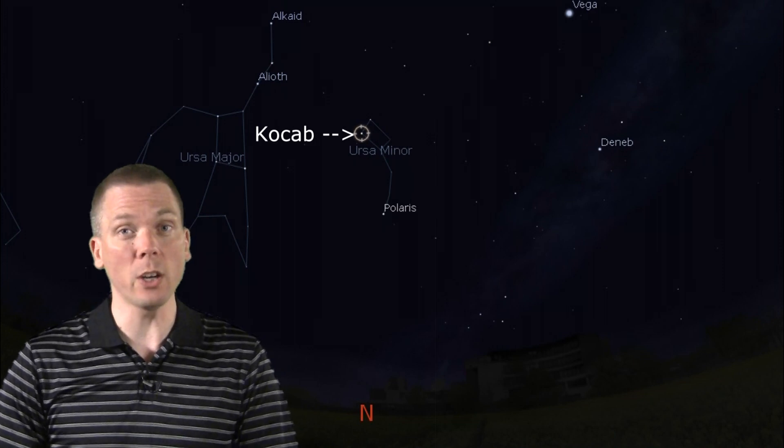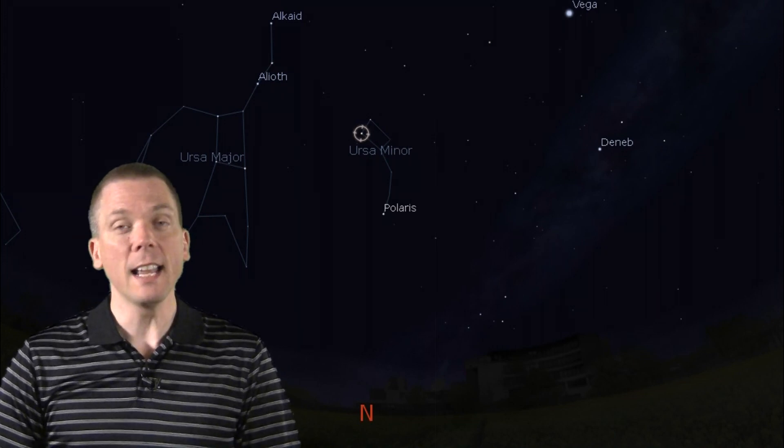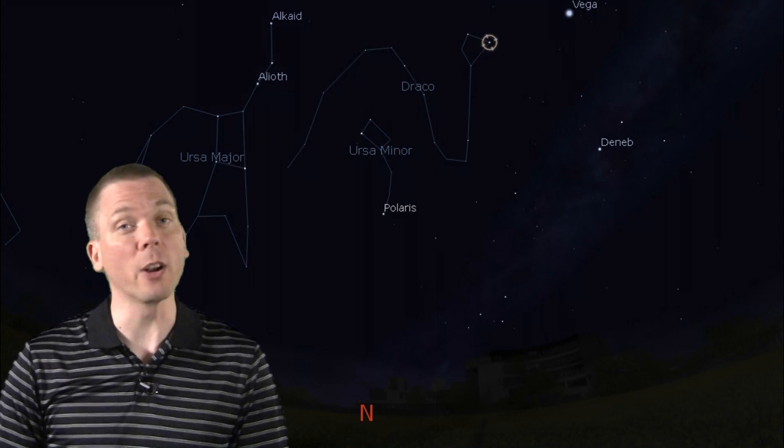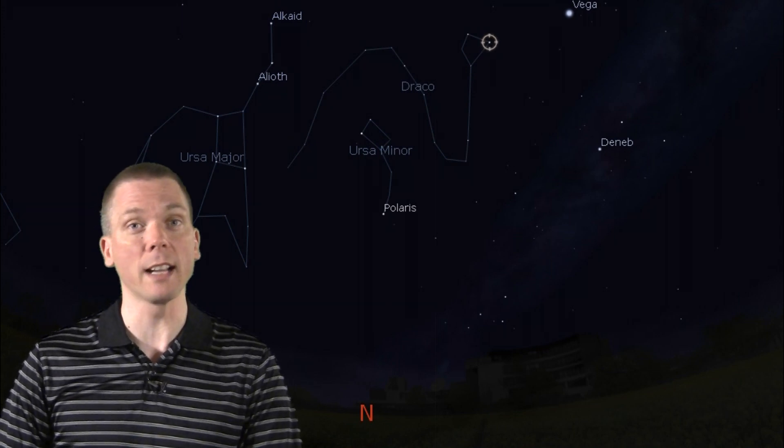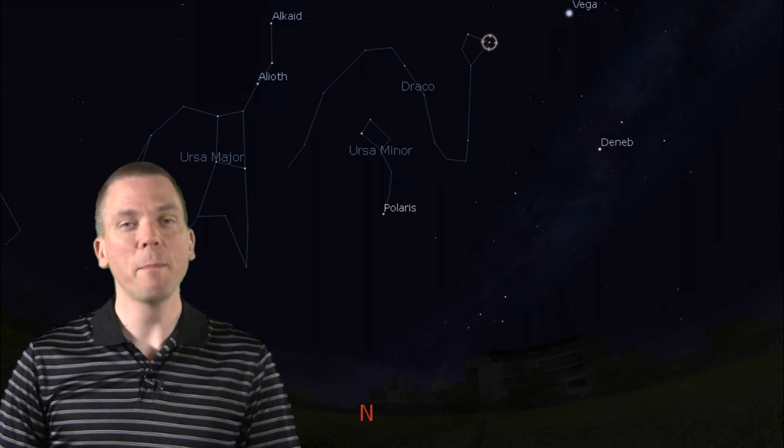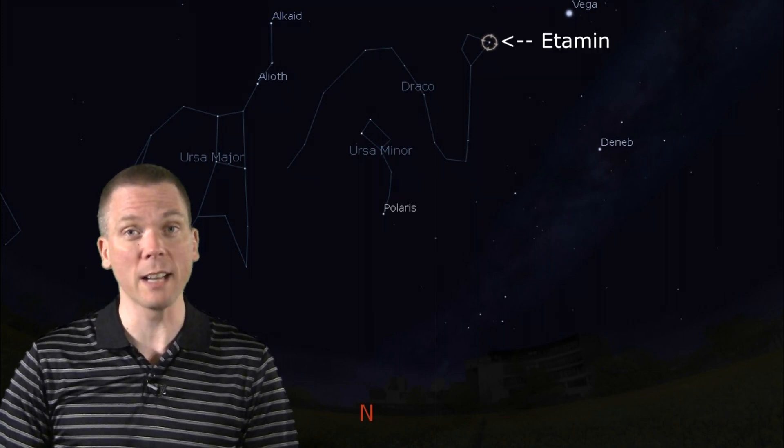Winding its way between Ursa Minor and Ursa Major is Draco the Dragon, which curls back up and around the little bear, then continues its way towards some of the dragon's brightest stars in its head, peering back at us via 2.2 magnitude Eltanin.